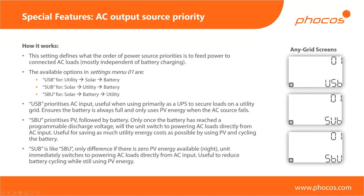Only if solar and utility together are not sufficient — and you can set a parameter for how far you want to discharge the battery before this happens — will it automatically switch over to battery. As soon as the grid fails, it automatically switches to battery mode and discharges the battery to provide power to your loads. If PV comes back in the meantime, PV will increase the battery voltage again to keep it topped up.